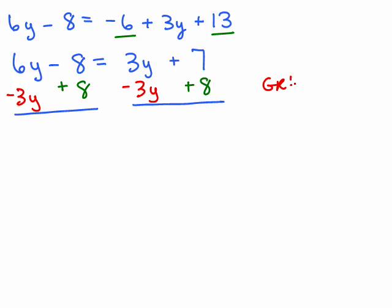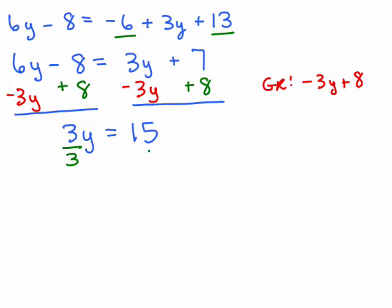By the way, my golden rule — I'm adding negative 3y plus 8 to both sides. Make sure that you add the same number. GR means the golden rule; I'm just showing what I'm adding to both sides of the equation. So we've got 3y on this side because the minus 8 and plus 8 cancel, and 7 plus 8 is 15, and we can divide both sides by 3. So y equals 5, and that looks correct.